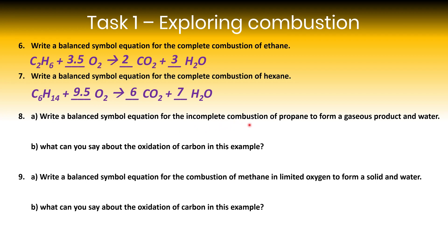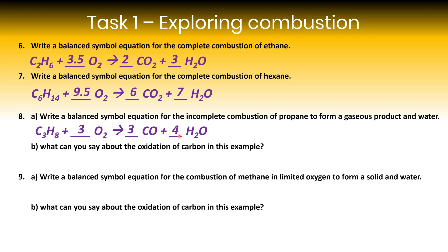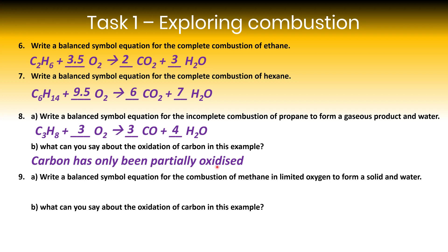A balanced equation for the incomplete combustion of propane forming a gaseous product and water: because it's incomplete combustion forming a gaseous product, the product must be carbon monoxide. Propane is C₃H₈; three carbons gives three CO; eight hydrogens gives four H₂O; balancing gives three O₂ on the left. The carbon in carbon monoxide has only been partially oxidised — if fully oxidised it would be CO₂; if not oxidised at all it would just be carbon.